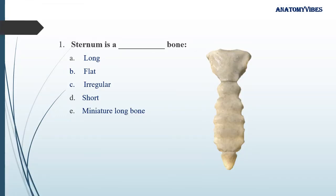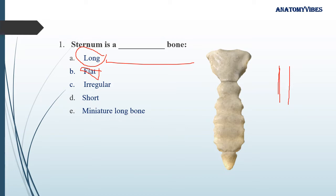The first question: sternum is a — fill in the blank — bone. So sternum is which type of bone? A long bone has two ends and one shaft, so sternum is not a long bone. It is a flat bone. As we can see, most of the surface of the sternum is flat. It is made up of two compact bone plates with bone marrow present in the middle. So the answer is flat bone — sternum is a flat bone.